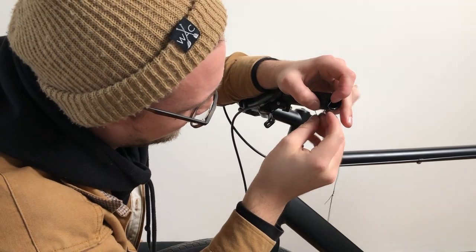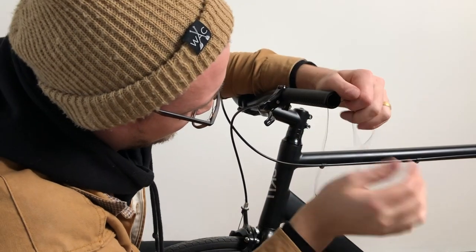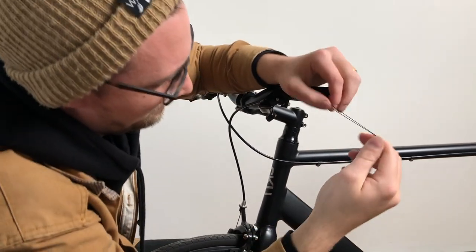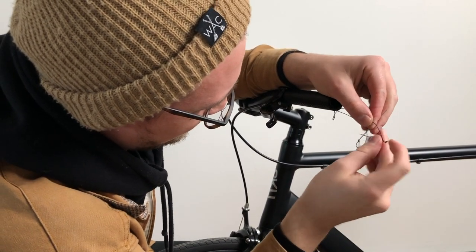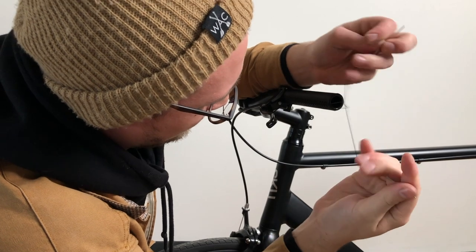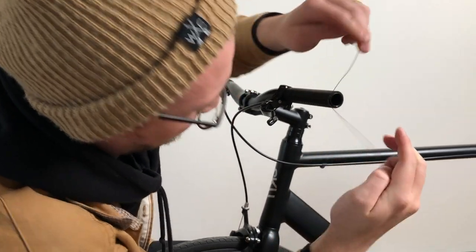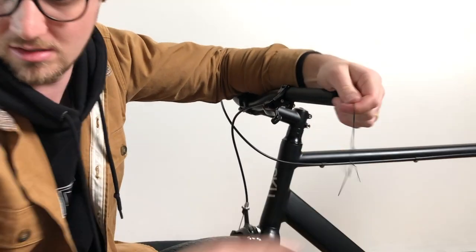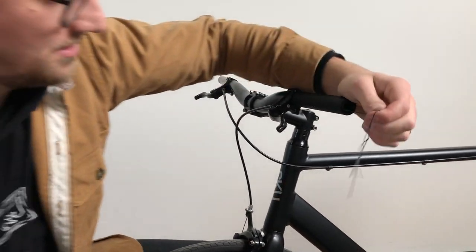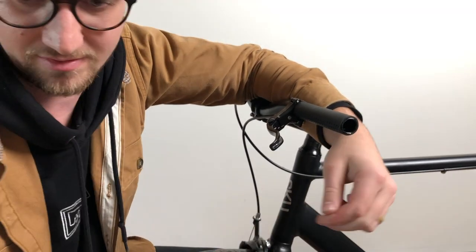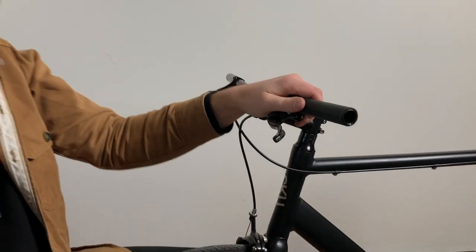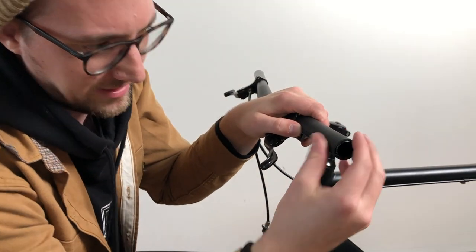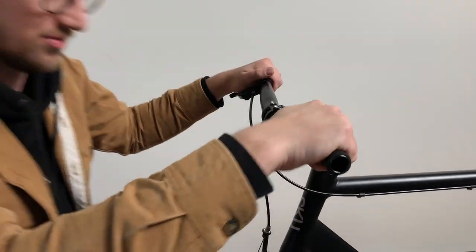And then when you get to the end of the handlebar, like so, pull that nice and tight. And you're gonna knot this. I just do kind of a double knot. And then take your scissors and snip it off. And then you burn the thread and then kind of shove it underneath of the handlebar.